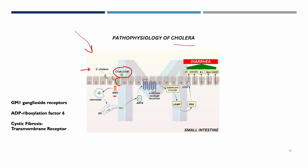Once endocytosed, the toxin is transported to the endoplasmic reticulum. Inside the cell, the CTA subunit is released and activates ADP ribosylation factor 6, ARF6. When ARF6 is activated, it activates the G-protein-coupled receptor pathway, which leads to the persistent activation of adenylate cyclase.